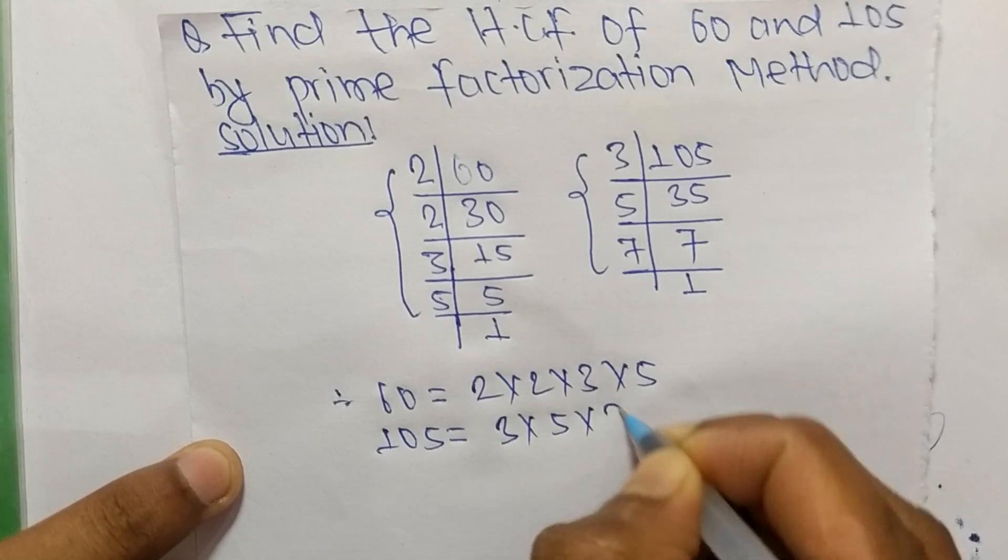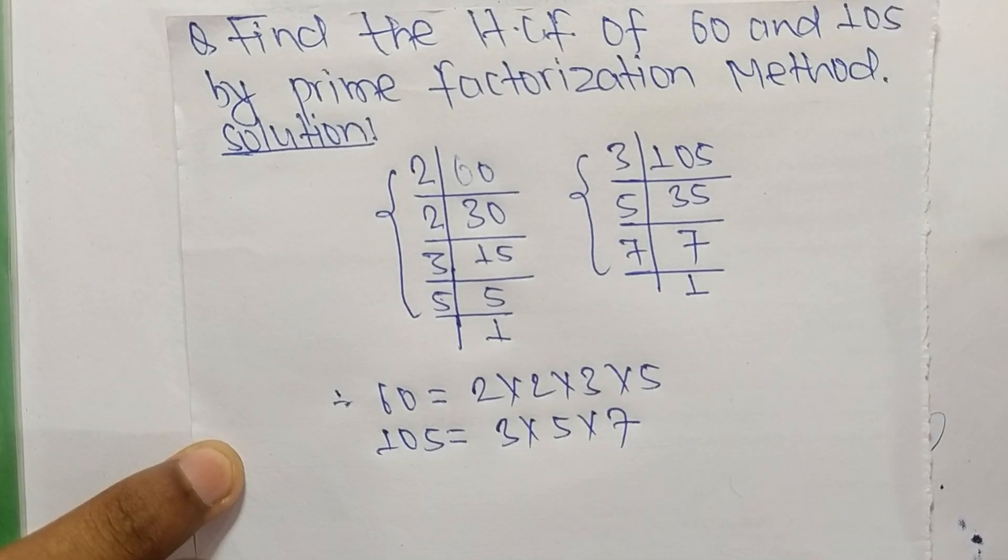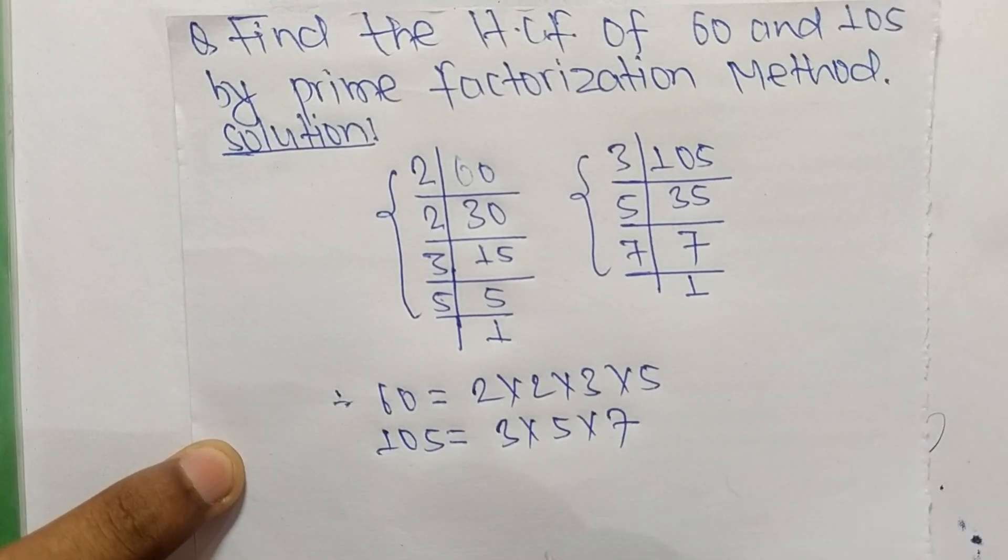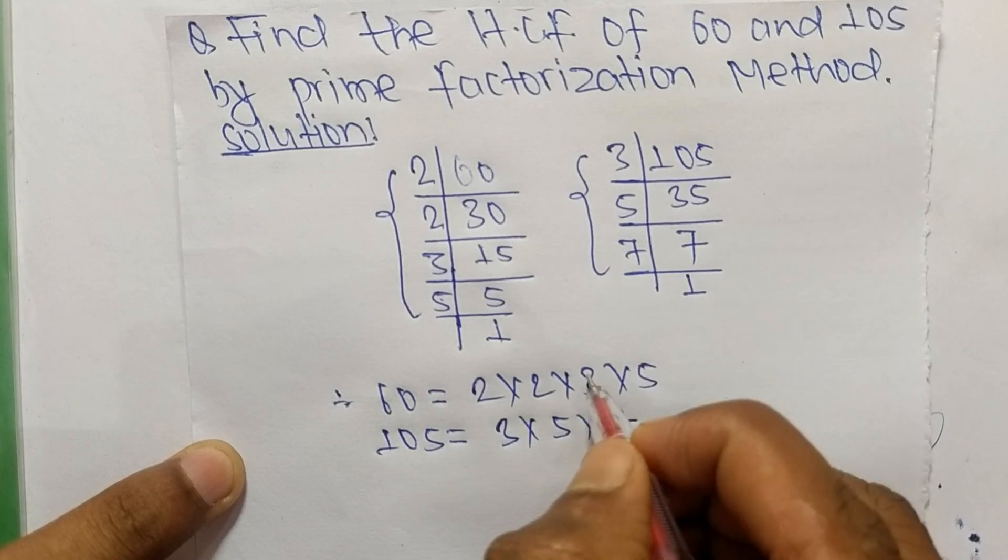So now we select the common factors in this prime factor. So the common here are 3 and second common is 5.